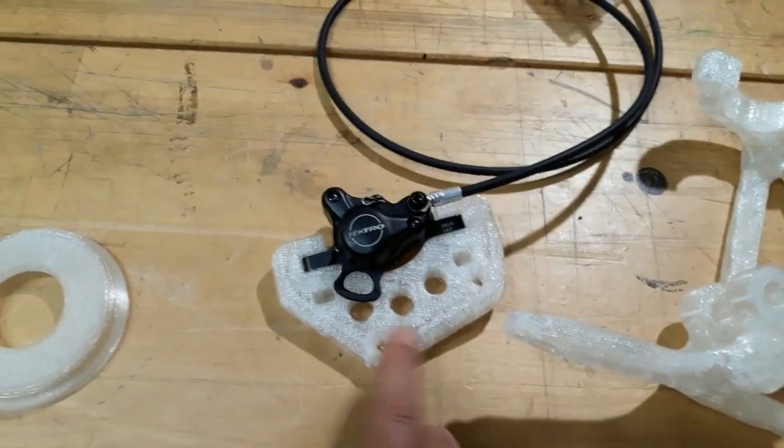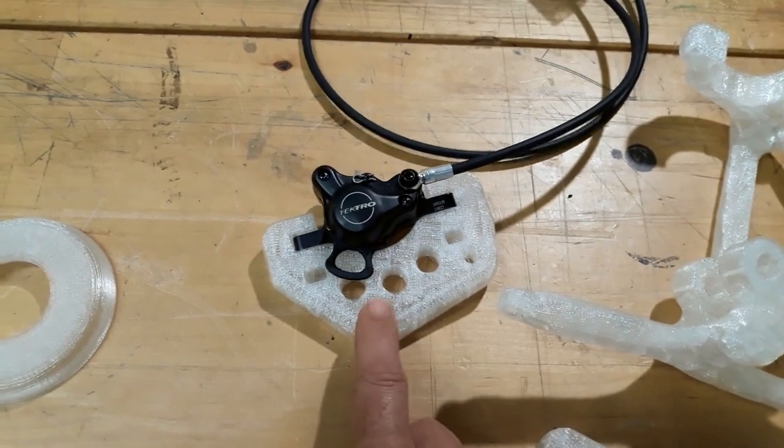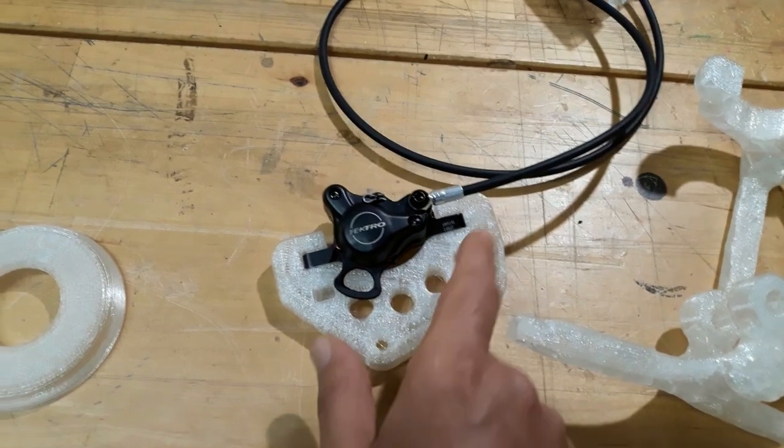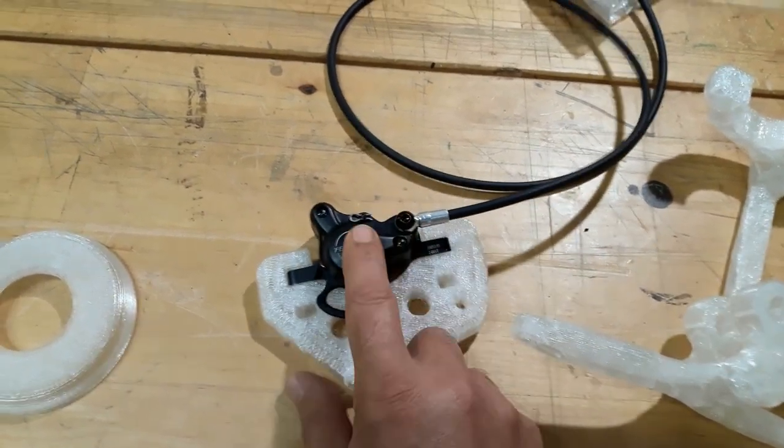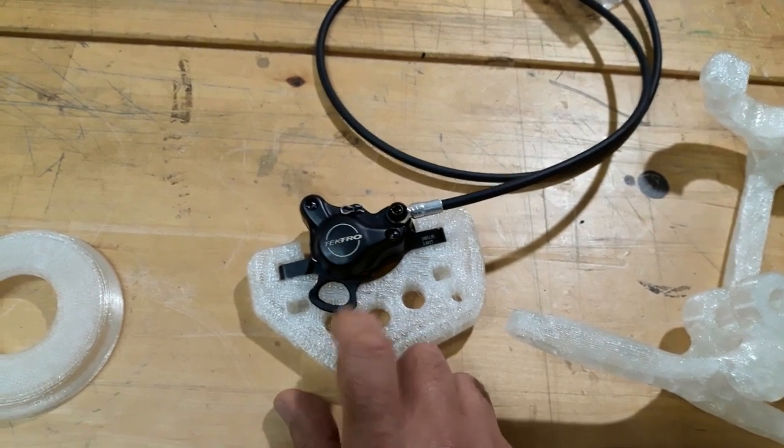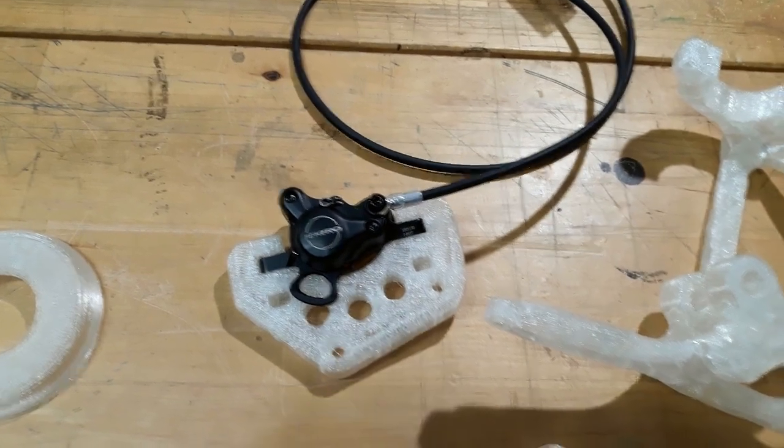This is the caliper holder. Obviously the caliper holder cannot be made on PETG or PLA, it has to be made on nylon because it has to support a lot of stress and as well probably the brake caliper will get hot and it's not good for that kind of material, so we made it on nylon.